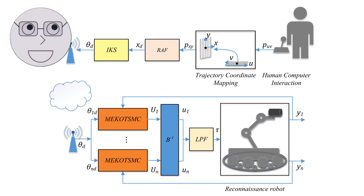In robotics, control theory is used to design control systems that allow robots to perform complex tasks. These systems use feedback loops to adjust the position and velocity of a robot's joints, allowing it to move and manipulate objects with precision.